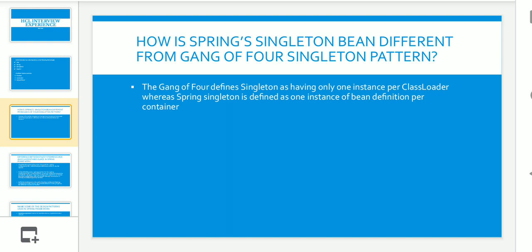The first question was: how is Spring singleton different from the Gang of Four singleton pattern? My answer: the Gang of Four defines singleton as having one instance per class loader, whereas Spring singleton is defined as one instance per bean definition per container.